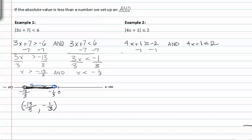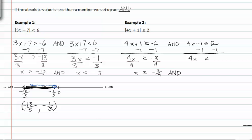Subtract one from both sides. On one side we get four x is greater than or equal to negative three-fourths, and on the other side we solve to get four x is less than or equal to one. Divide by four, and x is less than or equal to one-fourth.